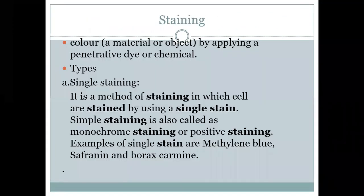Next is staining. To color a material or object by applying a penetrative dye or chemical is called staining. It has two types. Single staining is a method in which cells are stained using a single stain, also called simple or monochrome staining because a single color is used — mono means one and chrome means color. It is also called positive staining. Examples include methylene blue, safranin, and borax carmine.